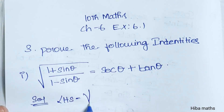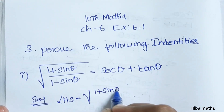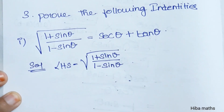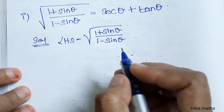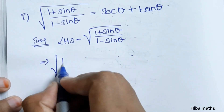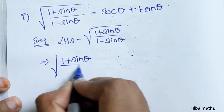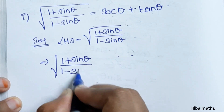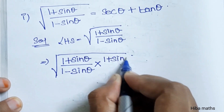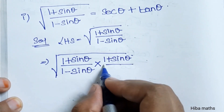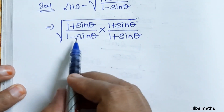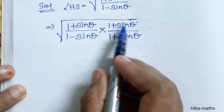LHS is the square root of (1 plus sin theta) divided by (1 minus sin theta). We multiply by the conjugate — that is, (1 plus sin theta) in both the numerator and denominator to rationalize the expression.